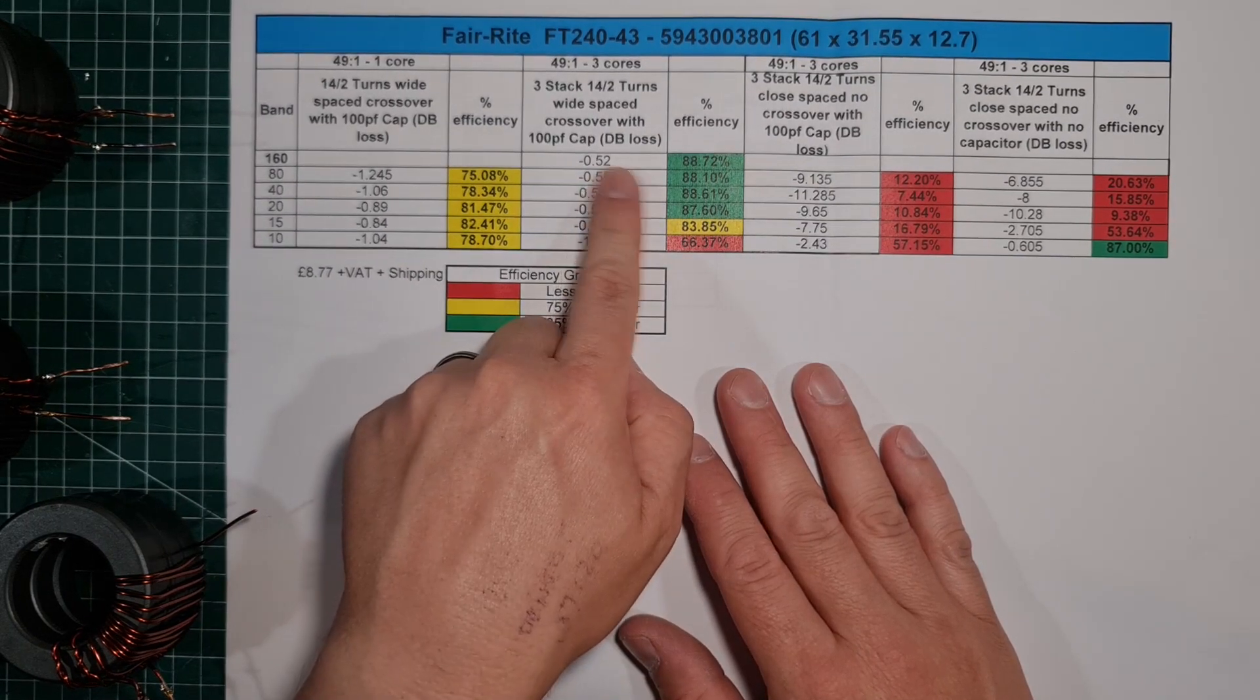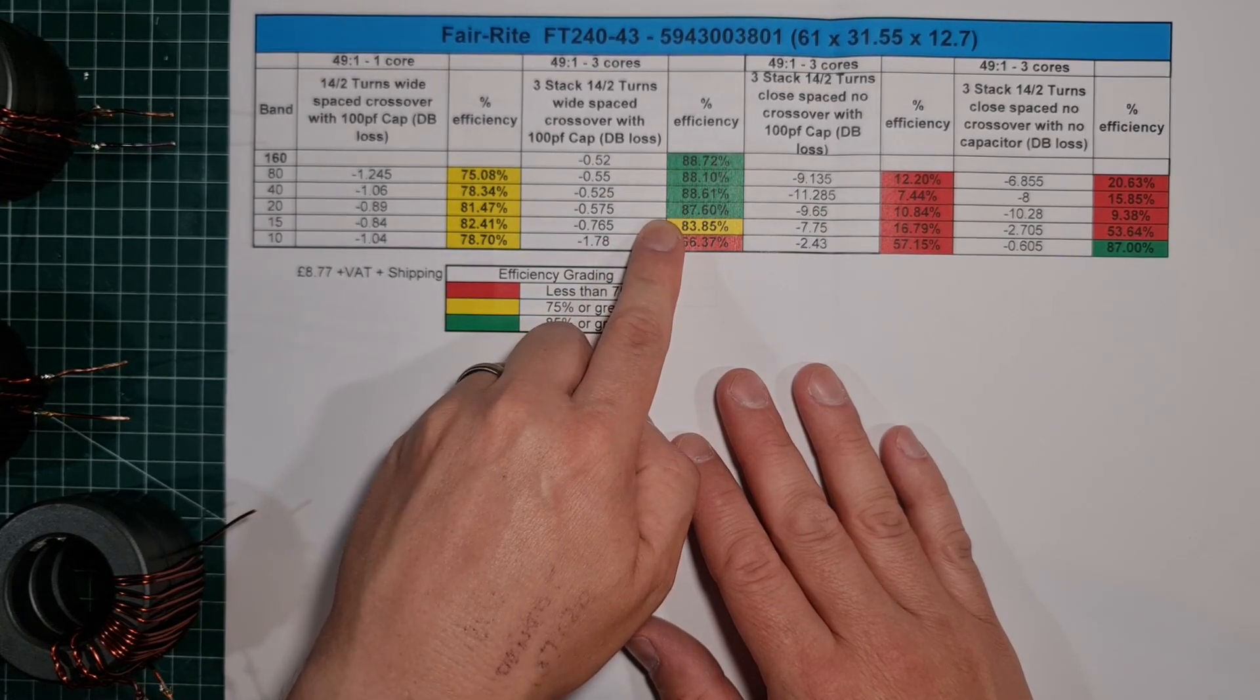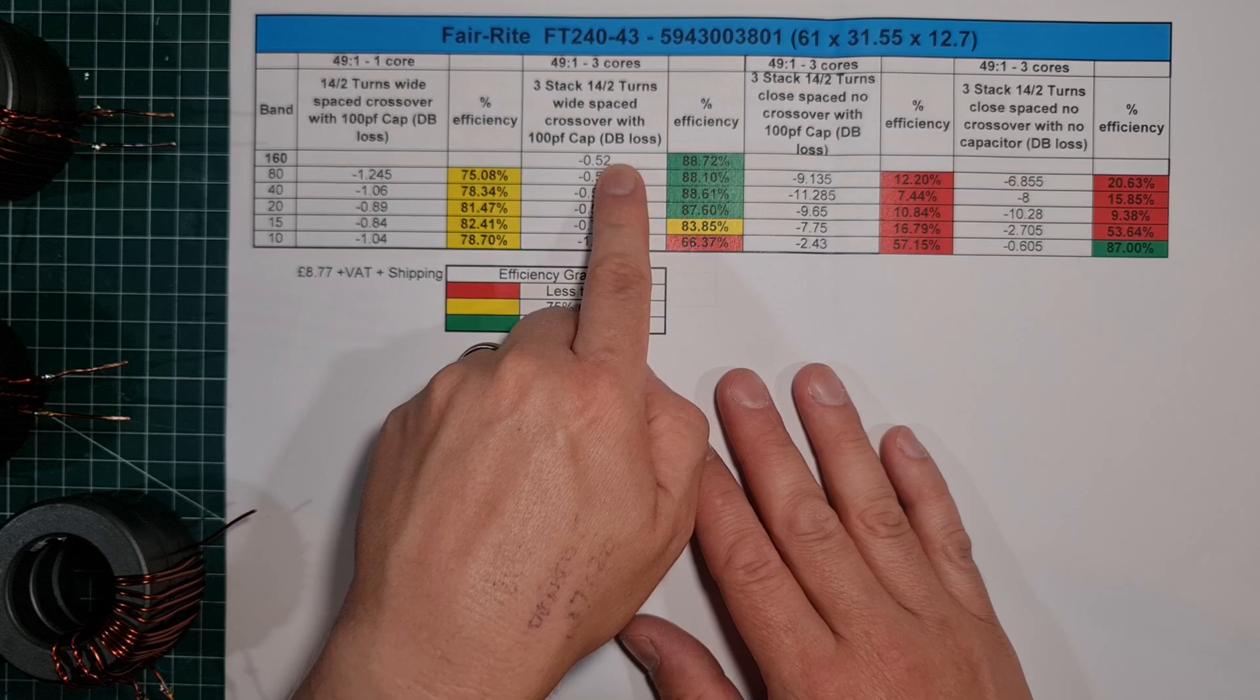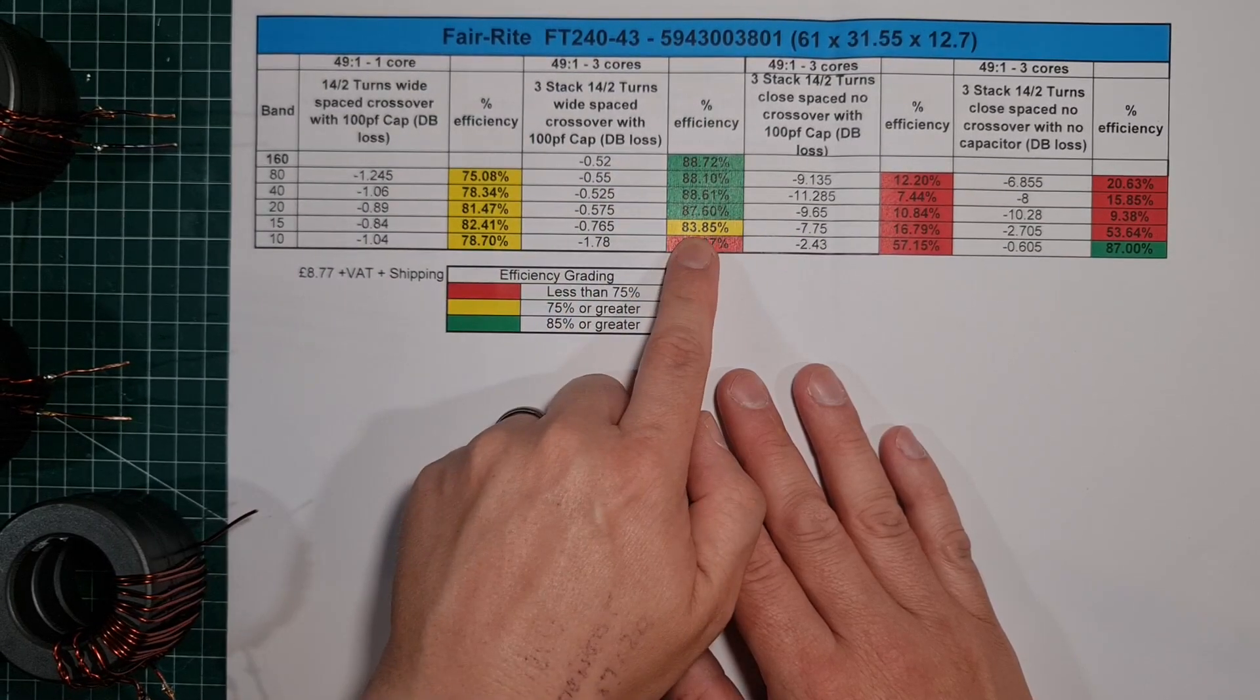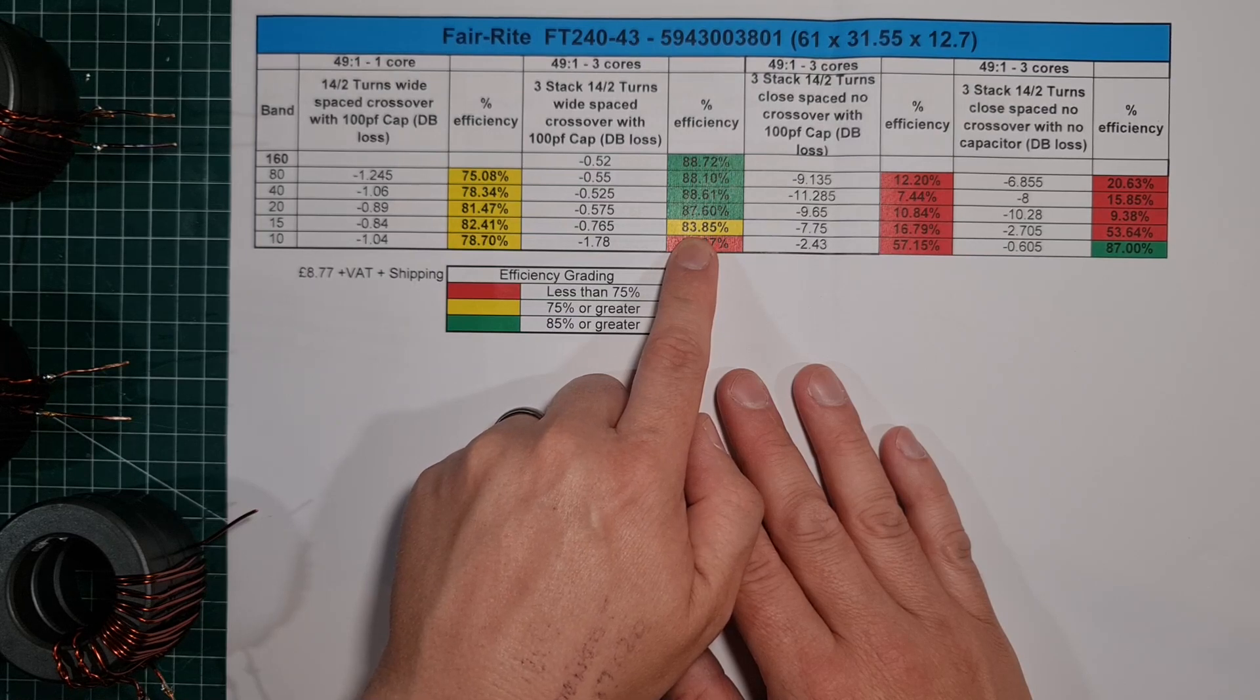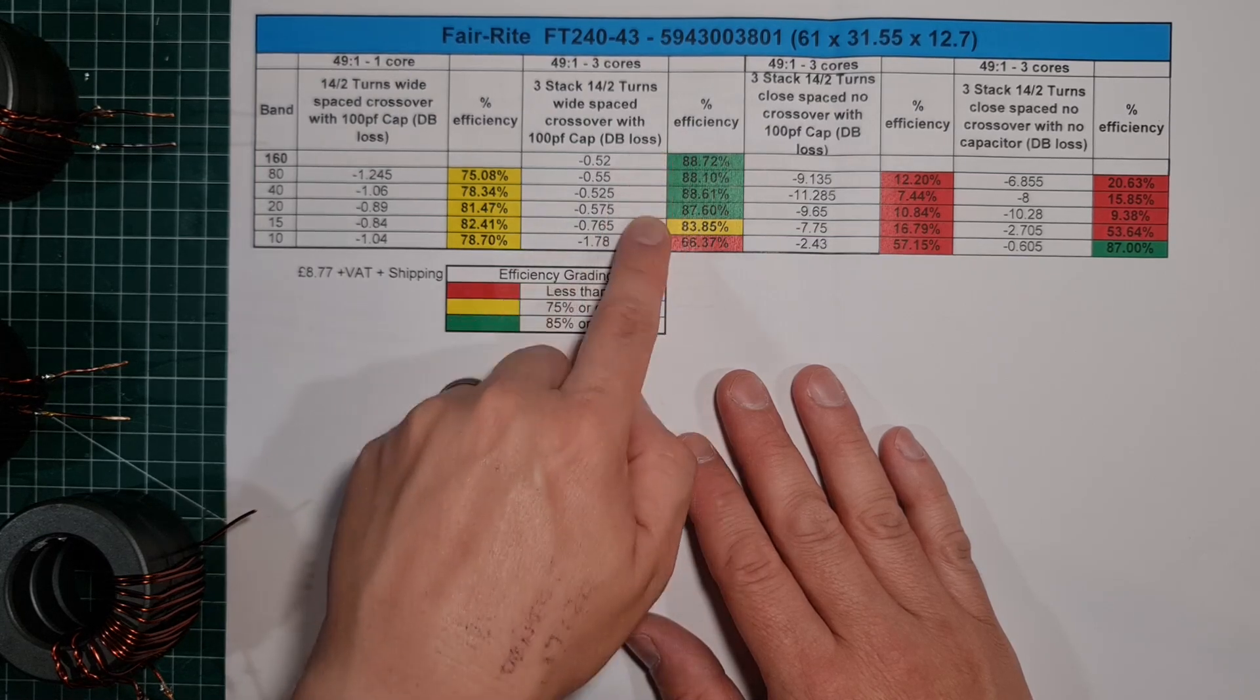If you look at the losses here, you could see even on the low bands, that's really excellent. When you're getting into the high 80s and over, that's really good losses. Half a dB, nearly 0.6 a dB. Really, really good. At 15, you're still nearly 84% efficient. That's not bad at all. I would be happy with that if I'm getting all this on the lower bands.